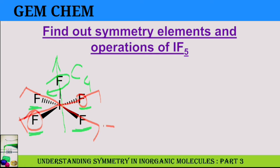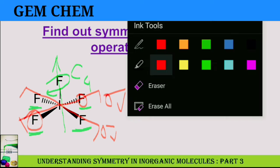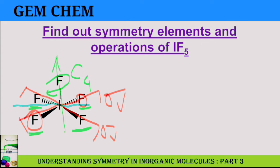And the other two sigma-V's are passing from in between, that is, it is passing between the two bonds. One is this one, another is this one. So we have four sigma-V's.